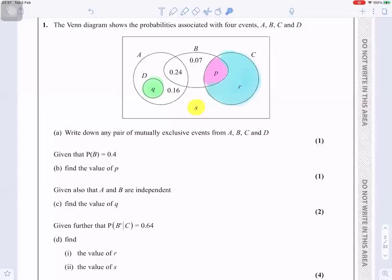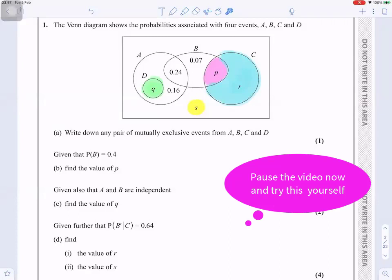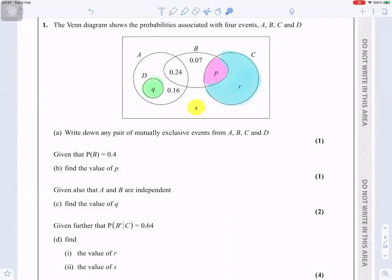Question number one. The Venn diagram shows the probabilities associated with four events A, B, C, and D. Write down any pair of mutually exclusive events from A, B, C, and D.